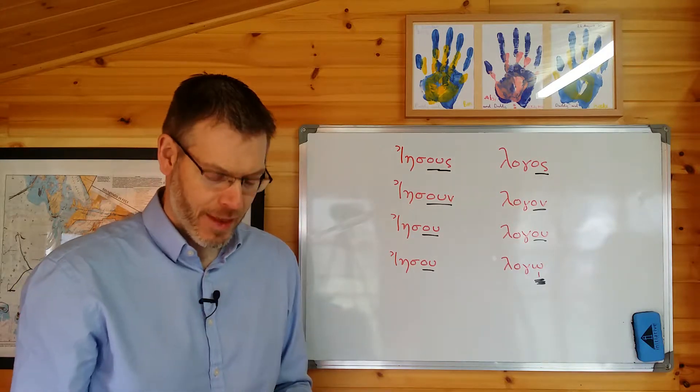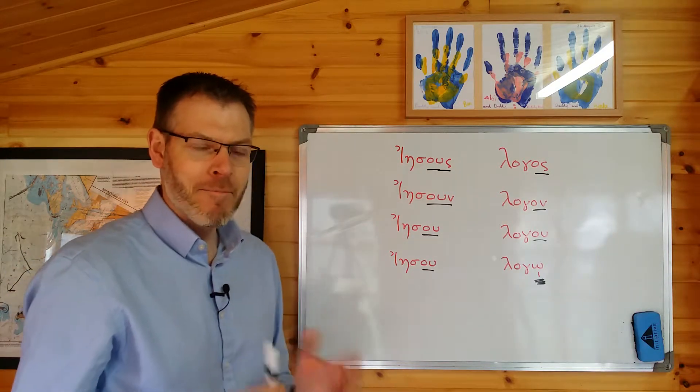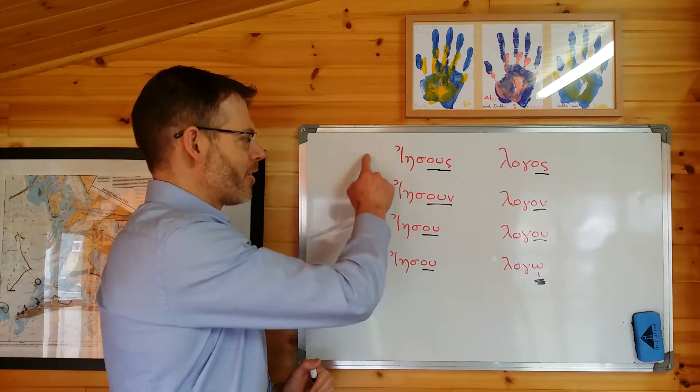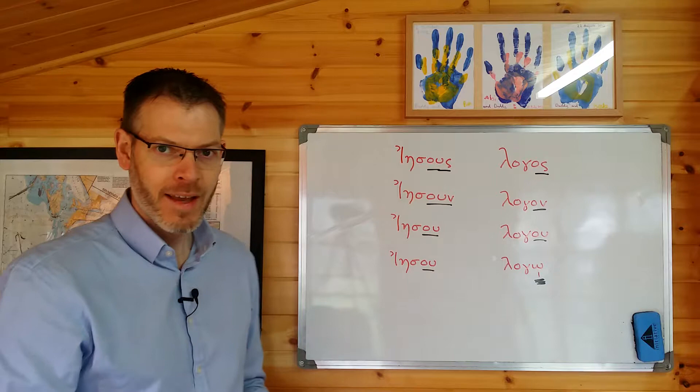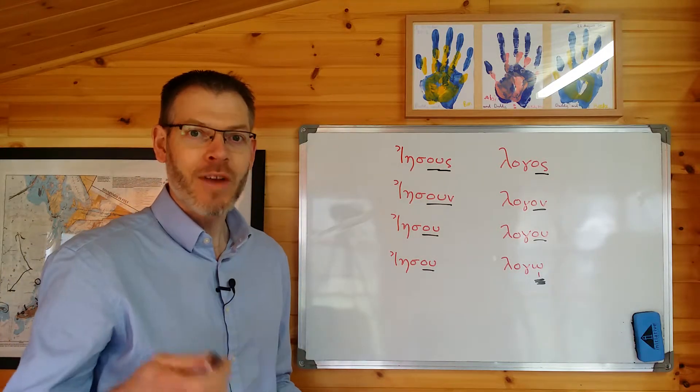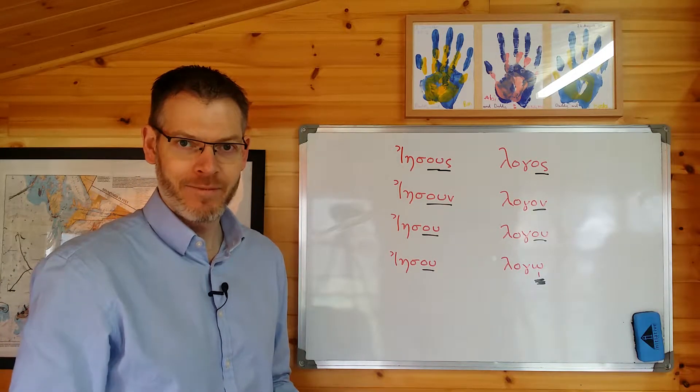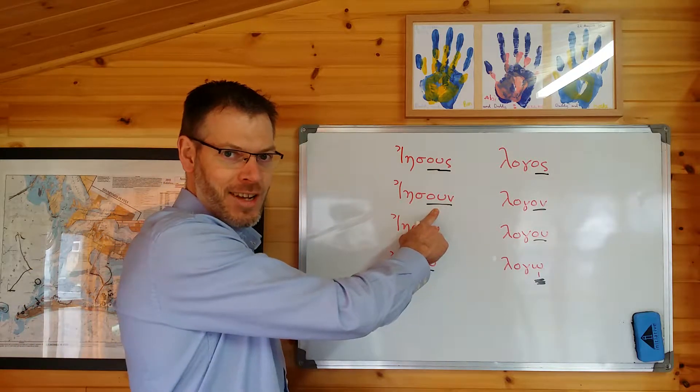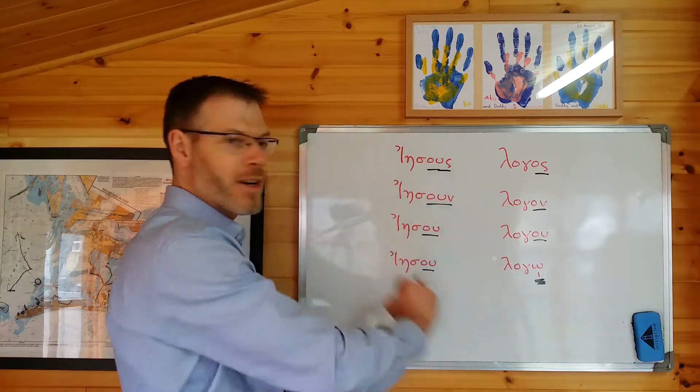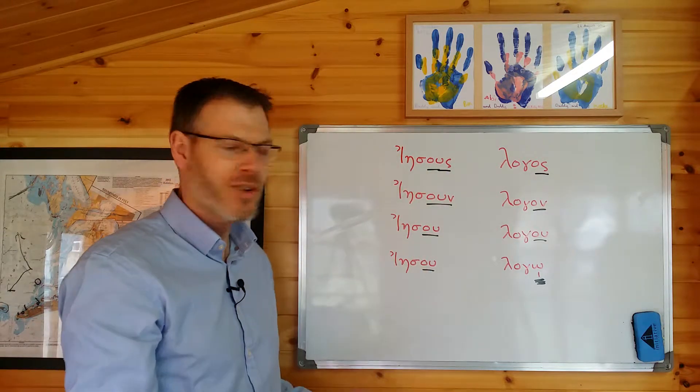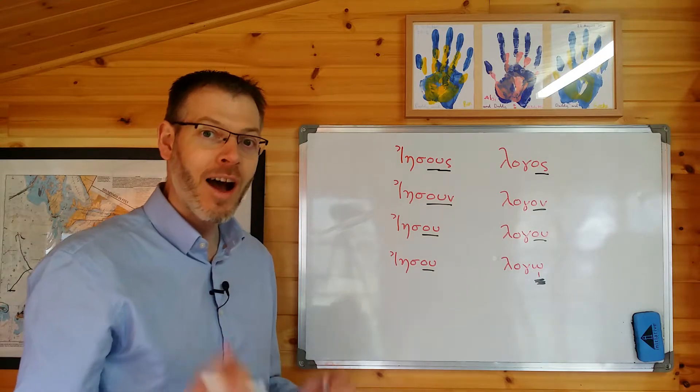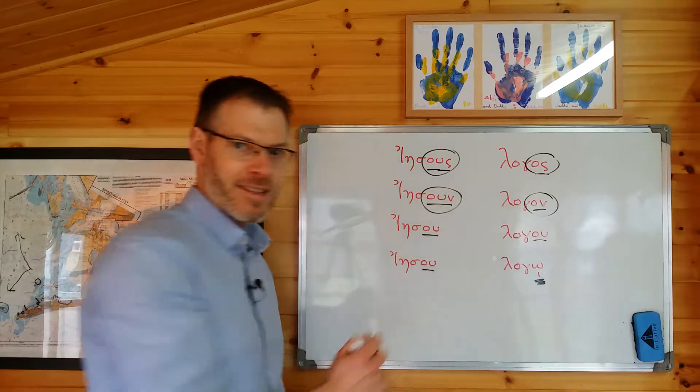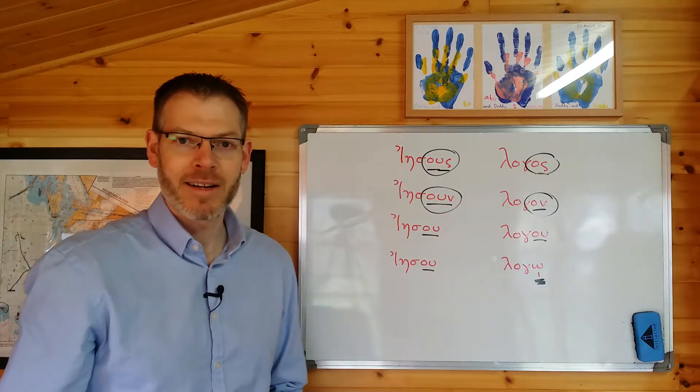But what I want to encourage you to do here, just for a moment, is to imagine that you didn't know that this is the nominative, accusative, genitive, and dative form. And particularly when you're looking at these, could you have guessed what form they're in? Could you have guessed that this is the nominative? Could you have guessed that this is the accusative? Or if I'd just given you these four words and not told you which case was which, would you have guessed that this is nominative and this is accusative? I hope you would have done, simply because of the resemblance of the endings. And this is a good principle to have in mind in the future.